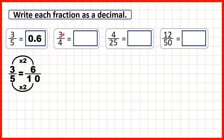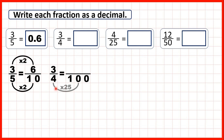Next we have three quarters. We can't change three quarters into tenths because ten is not a multiple of four — it's not in the four times table. But one hundred is a multiple of four, so we can change three quarters into hundredths. Four times twenty-five is a hundred. Counting in twenty-fives: twenty-five, fifty, seventy-five, and the fourth multiple is one hundred.